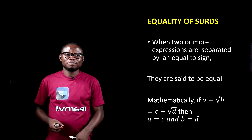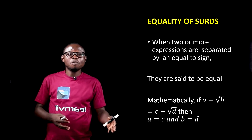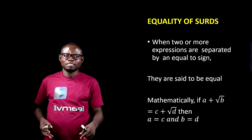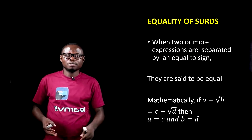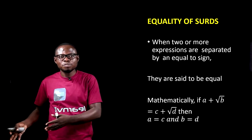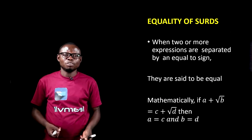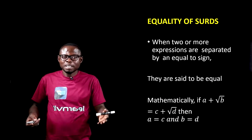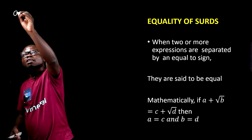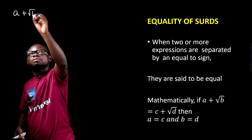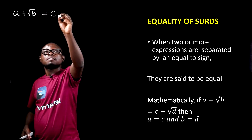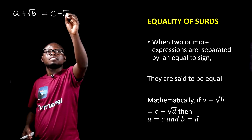Now, let's look at the concept. When two or more expressions are separated by an equal to sign, which includes radicals, then we say that those sets are equal. Mathematically, we can write that a plus root b is equal to c plus root d.